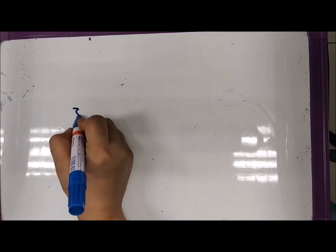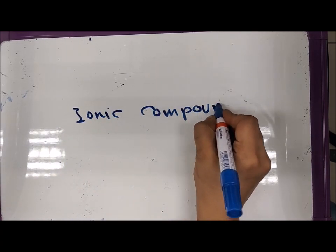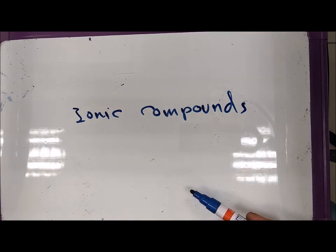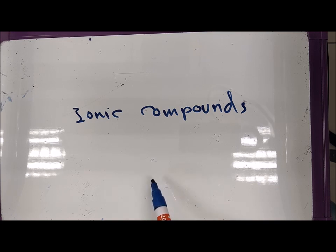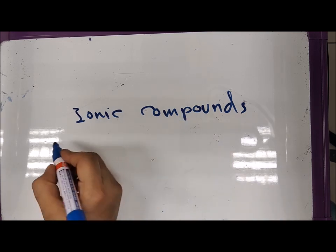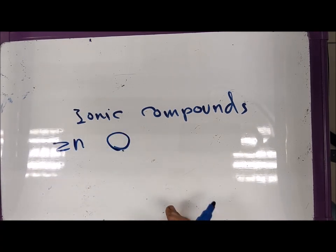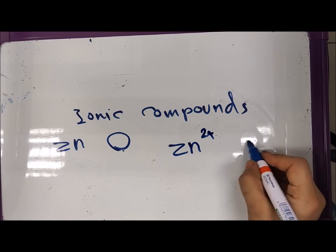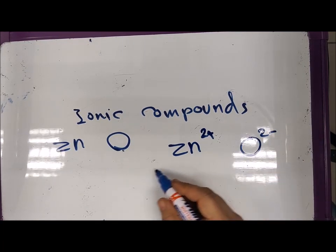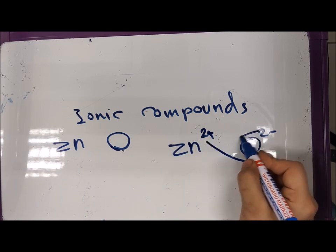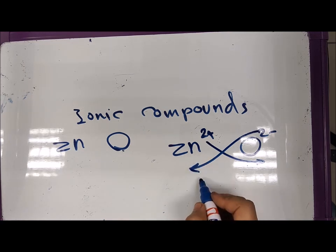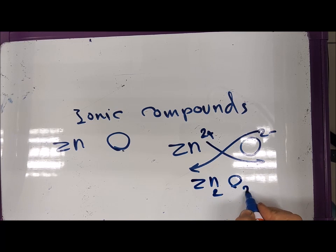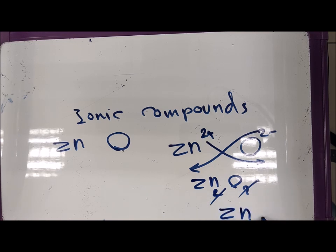In ionic compounds, when you write the formula, the charges of the individual ions must cancel out to produce an overall charge of zero. For example, zinc and oxygen give us zinc oxide. Zinc is Zn²⁺ and oxygen is O²⁻. You swap the charges: it becomes Zn₂O₂, then simplify by cancelling to get ZnO. This is the formula of the ionic compound zinc oxide.